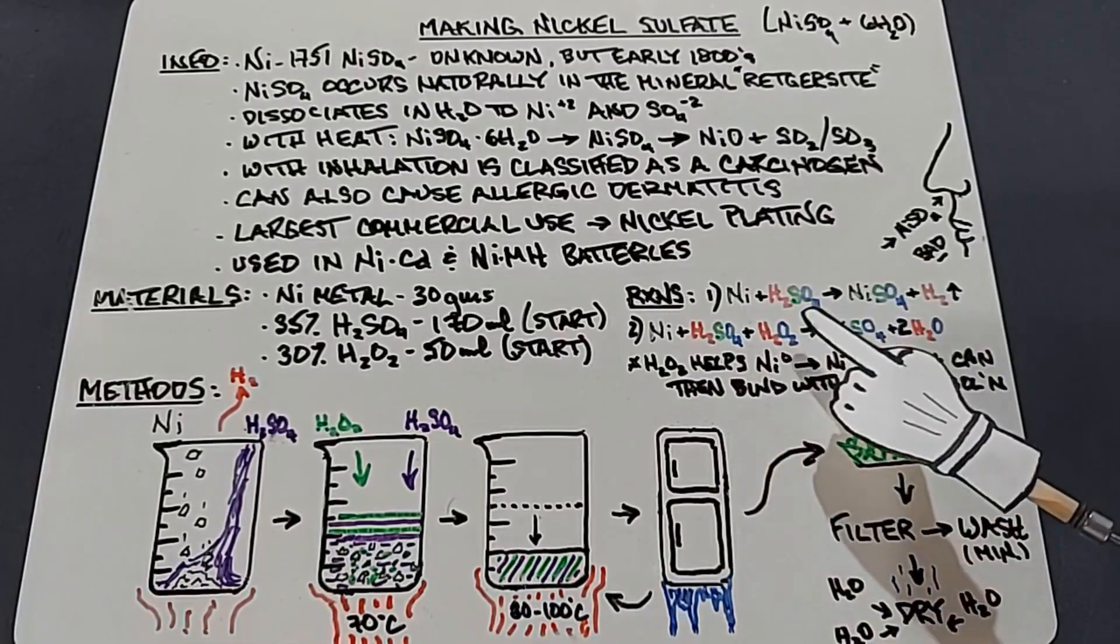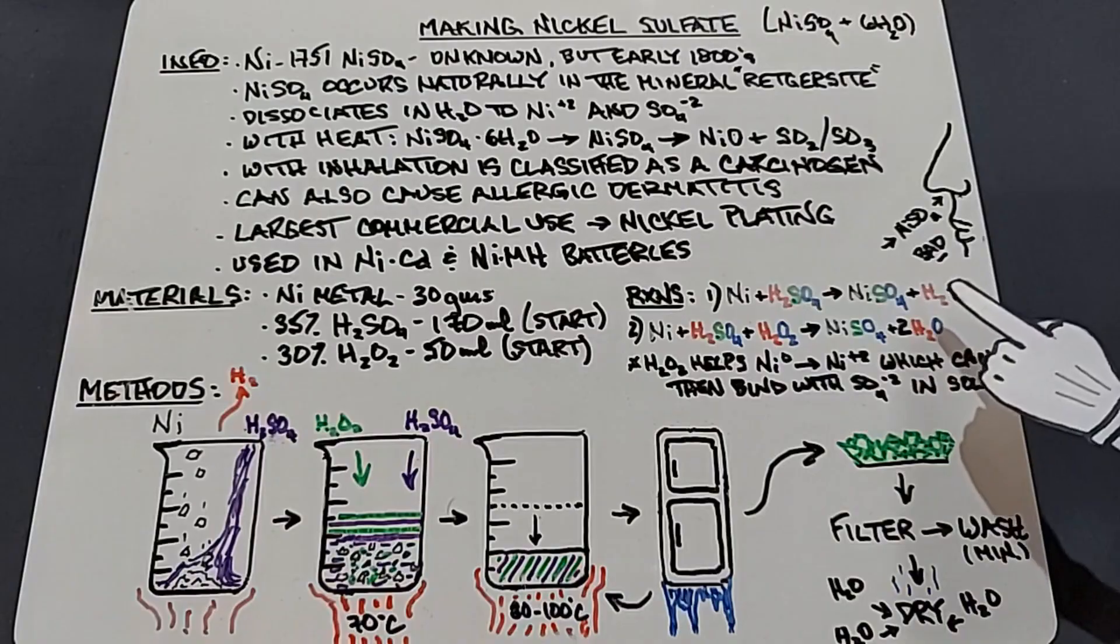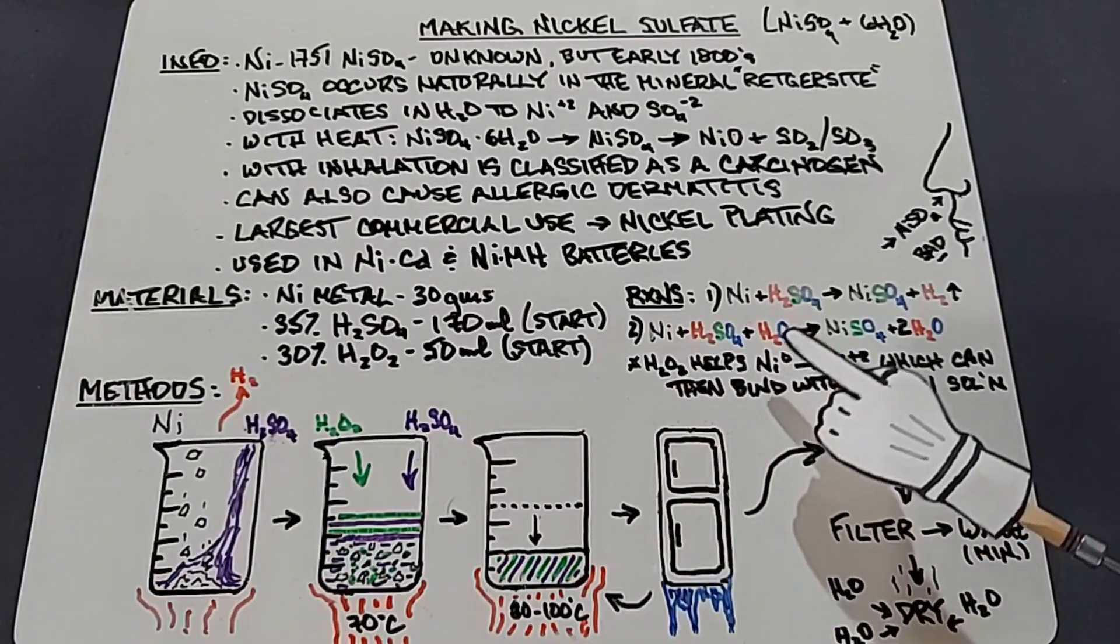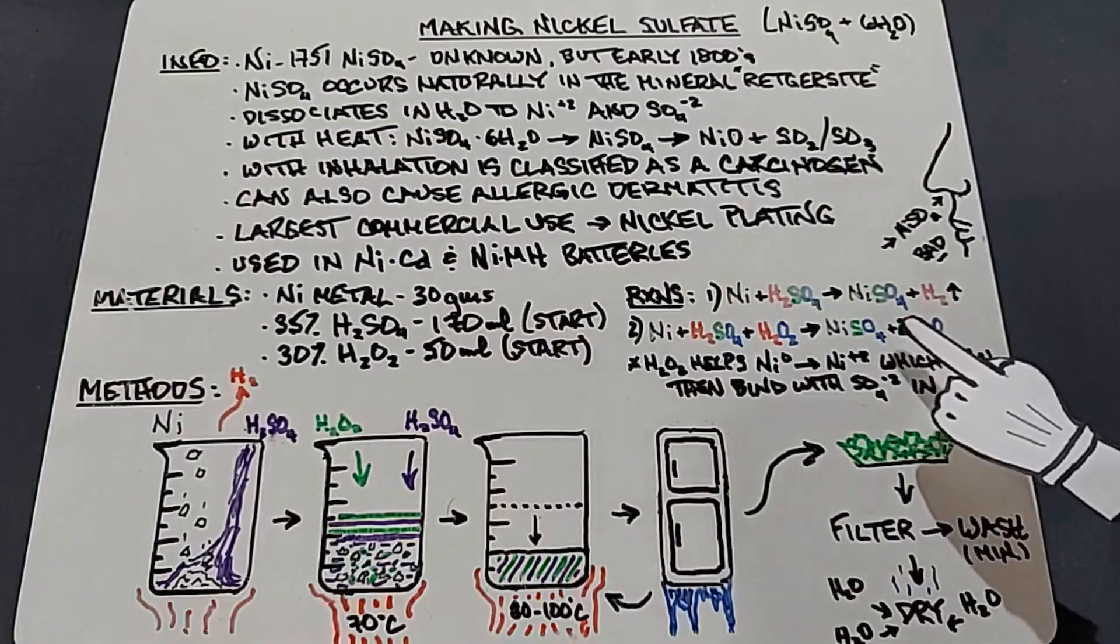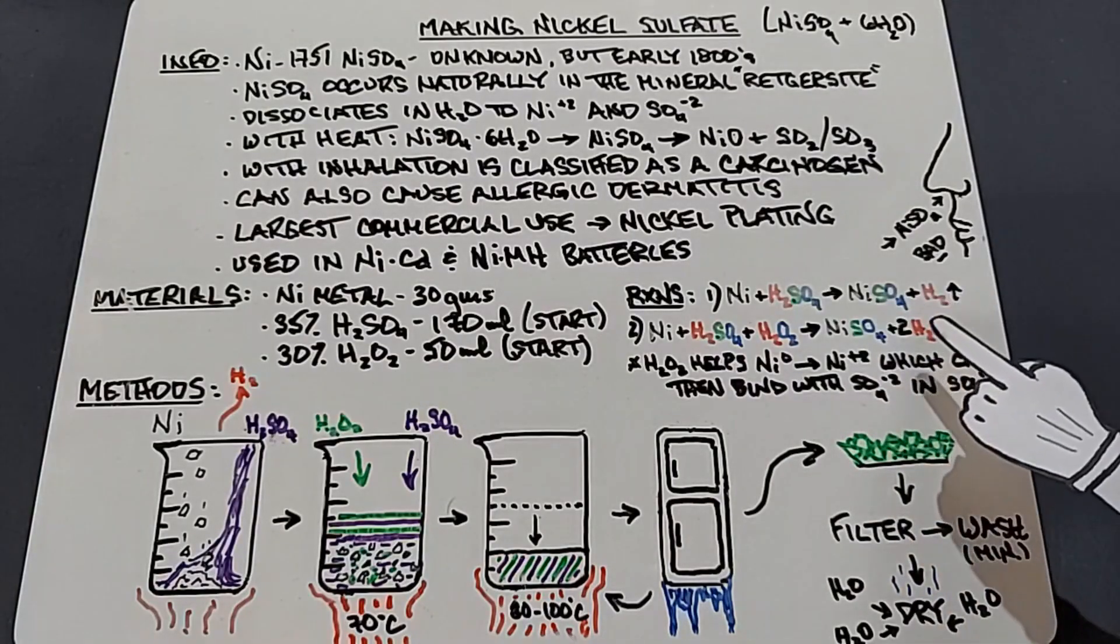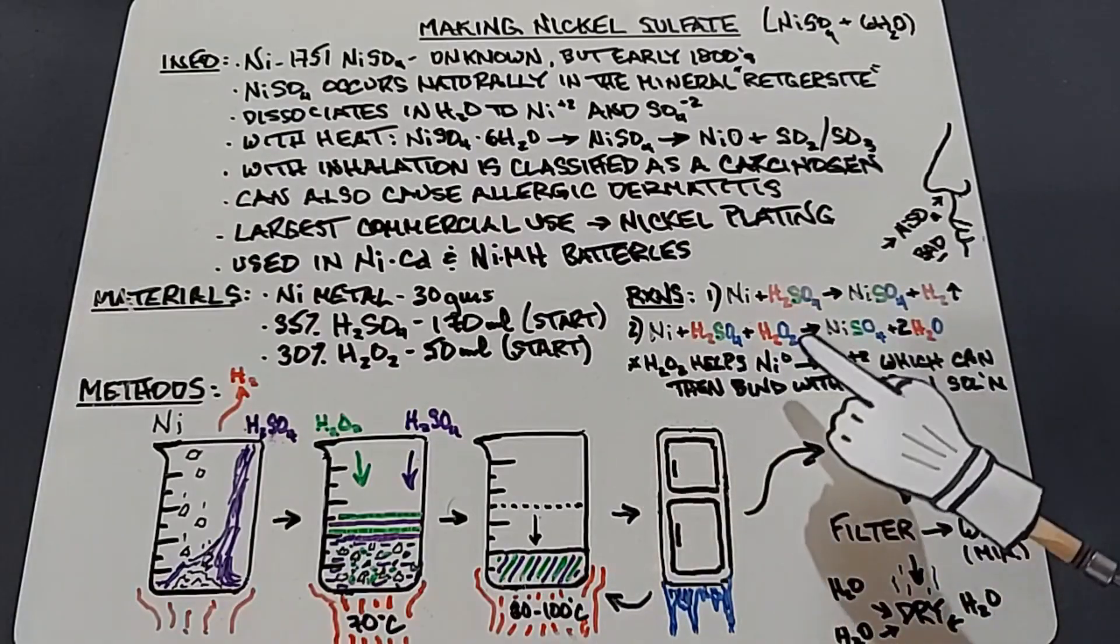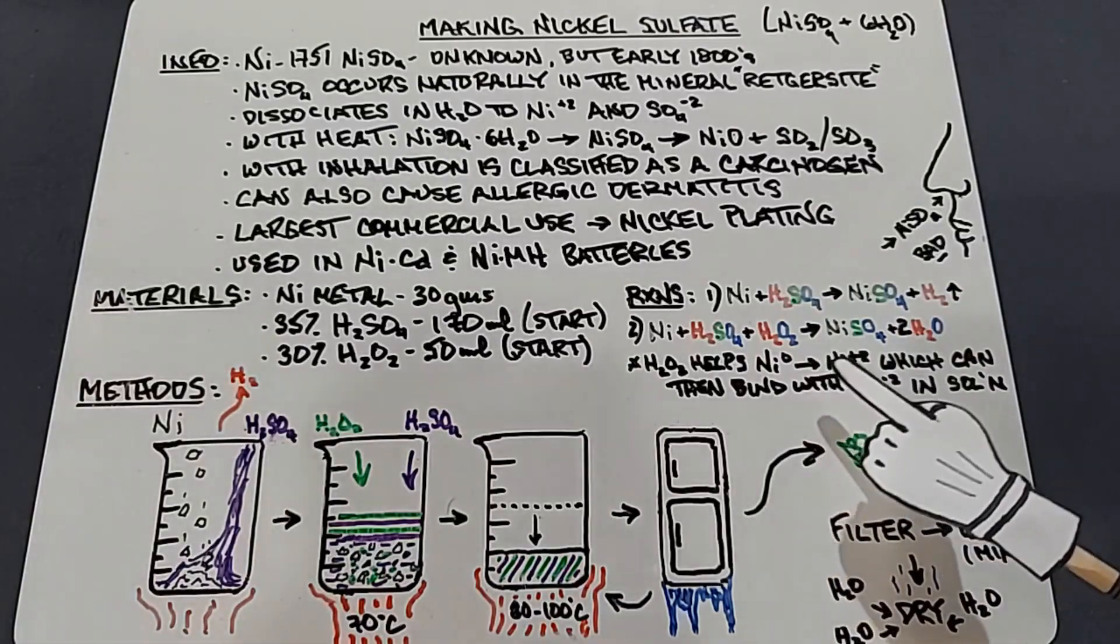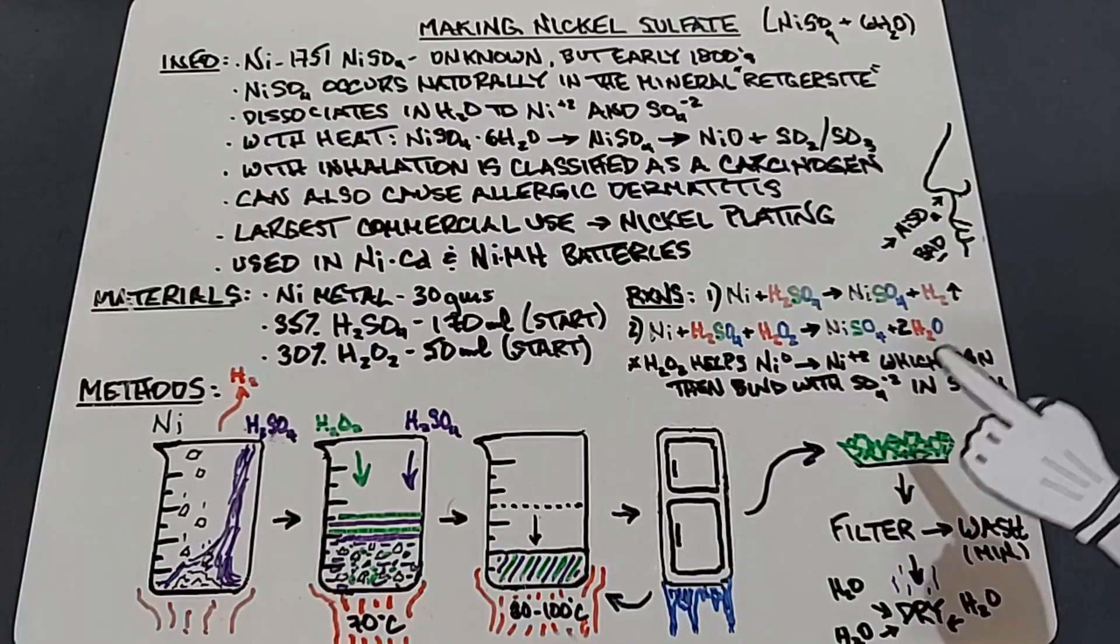A couple of straightforward reactions here: nickel when mixed with sulfuric acid will give you nickel sulfate hexahydrate and hydrogen gas, so always be alert to that. Secondly, nickel plus sulfuric acid plus hydrogen peroxide will give you nickel sulfate and water. This is great for breaking down the nickel but doesn't help when you've got to get rid of that water. The hydrogen peroxide helps the nickel go from a zero oxidative state to a plus two, meaning it's helping to pull the nickel ions off the metal, which then combine with the sulfate negative two in solution.